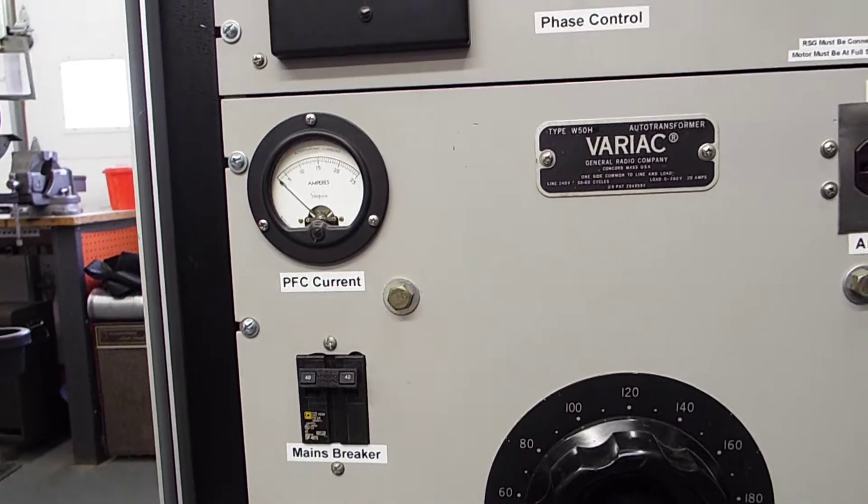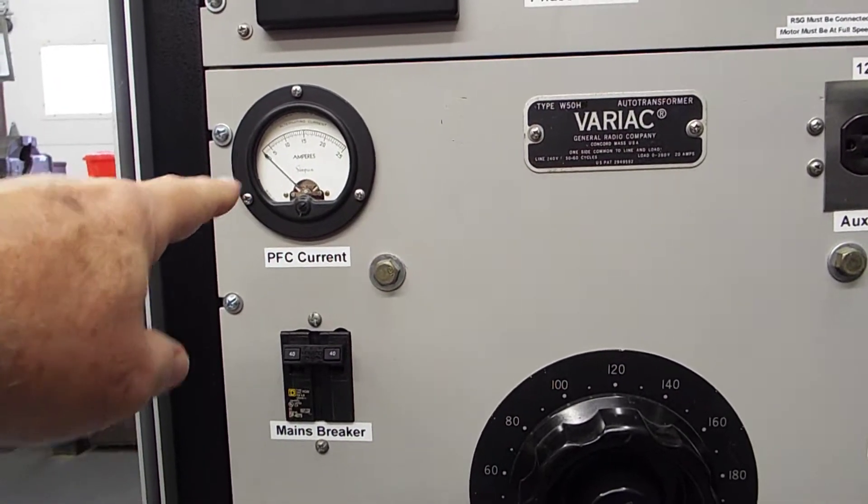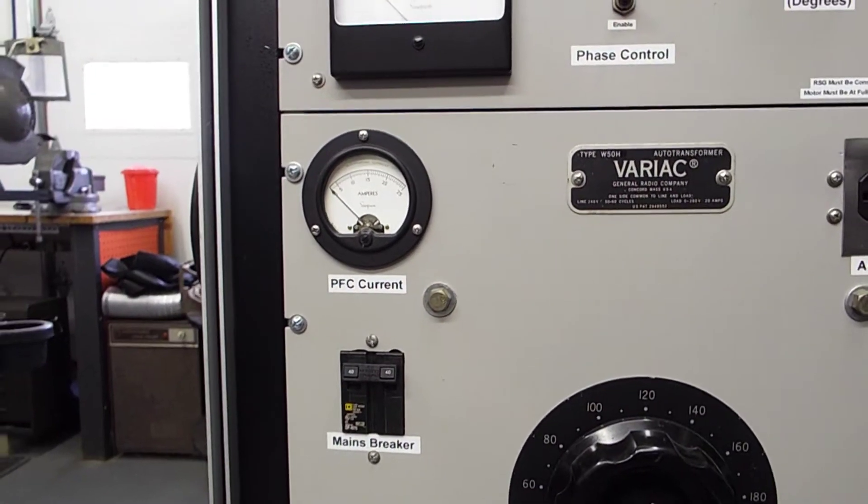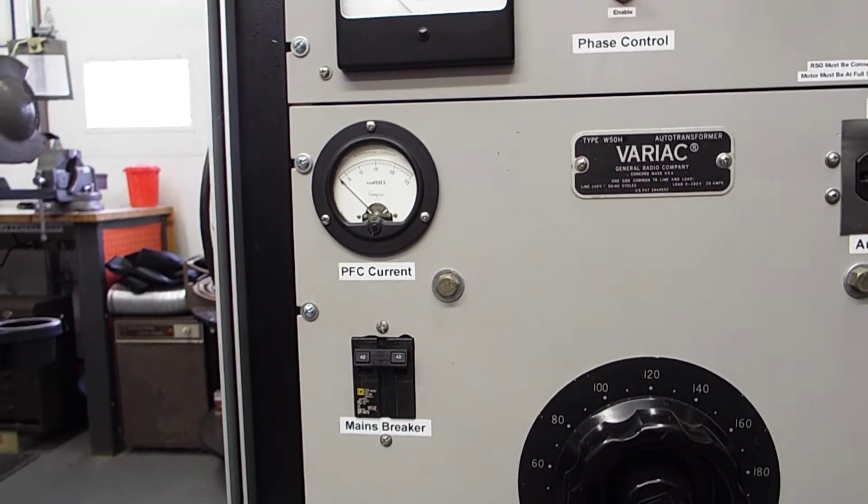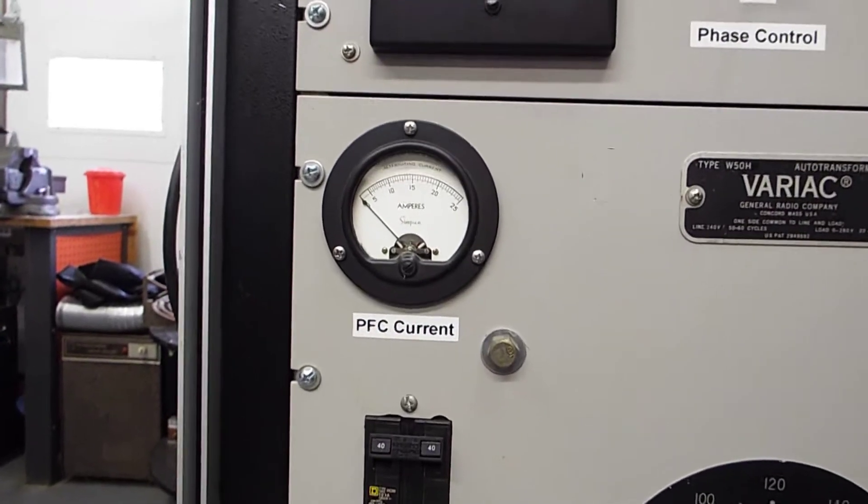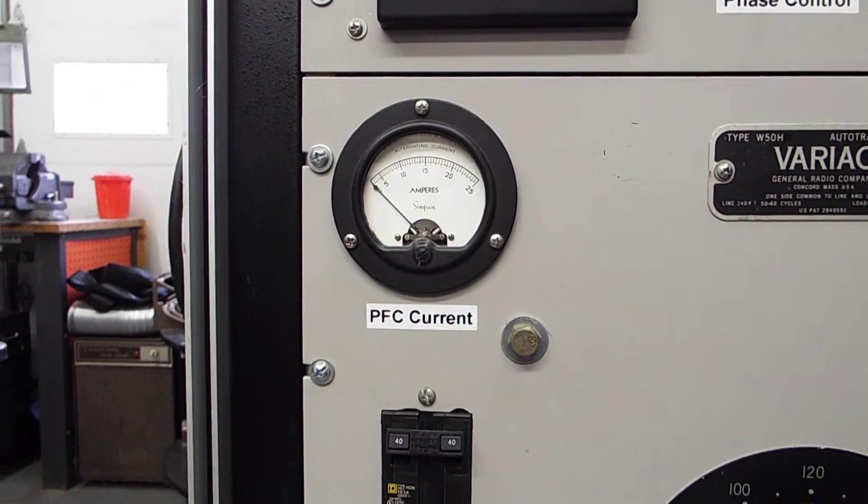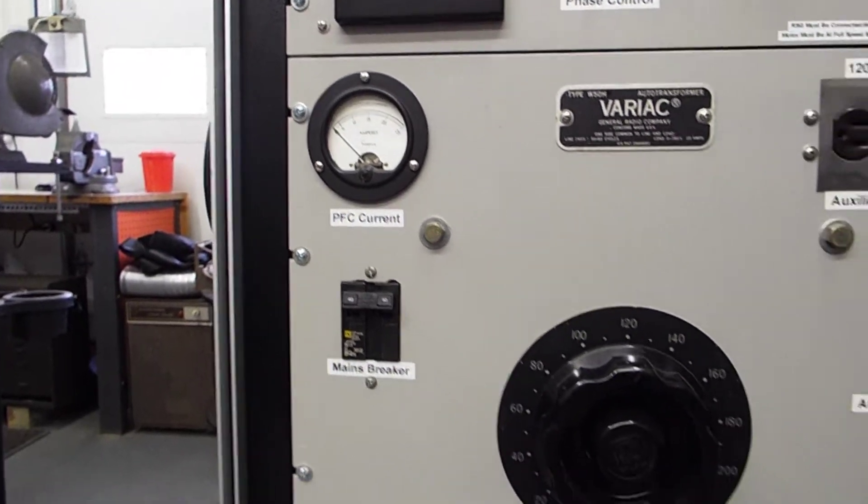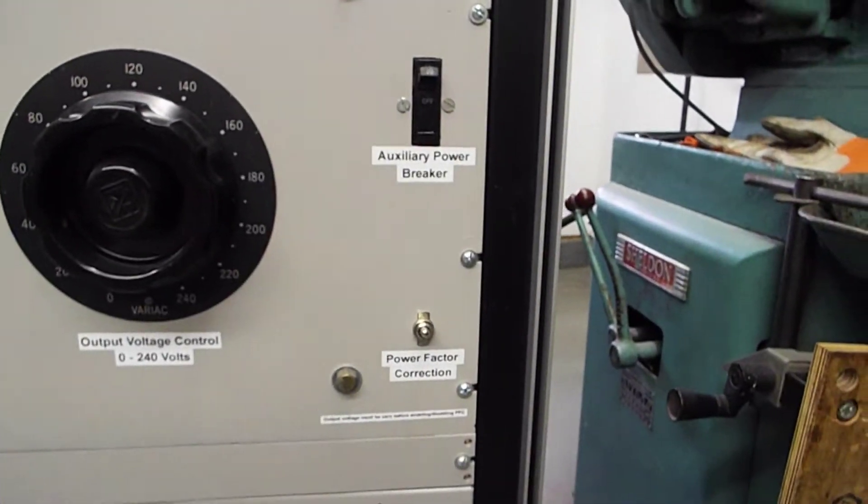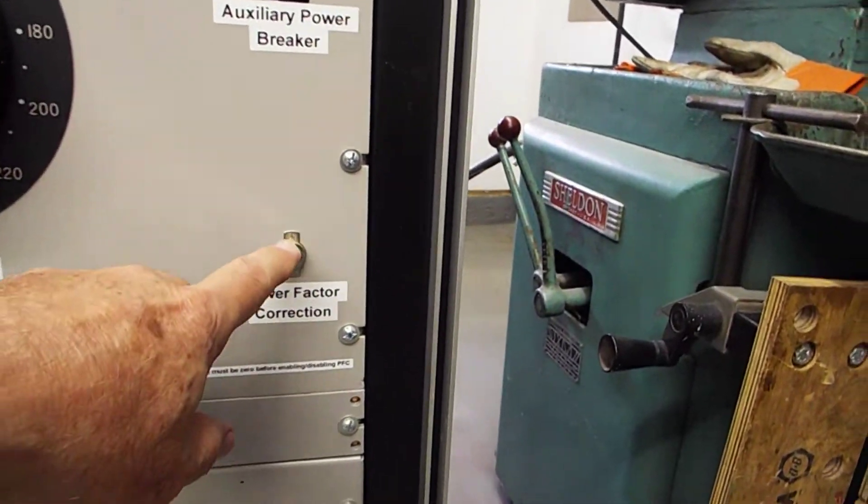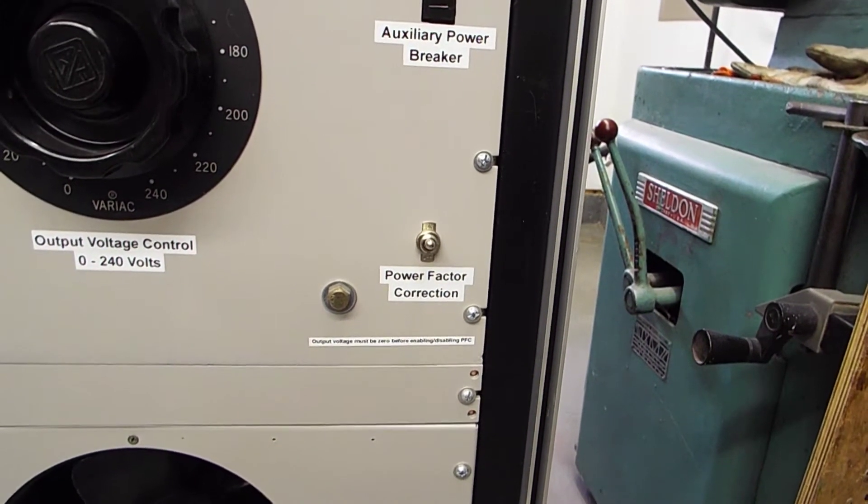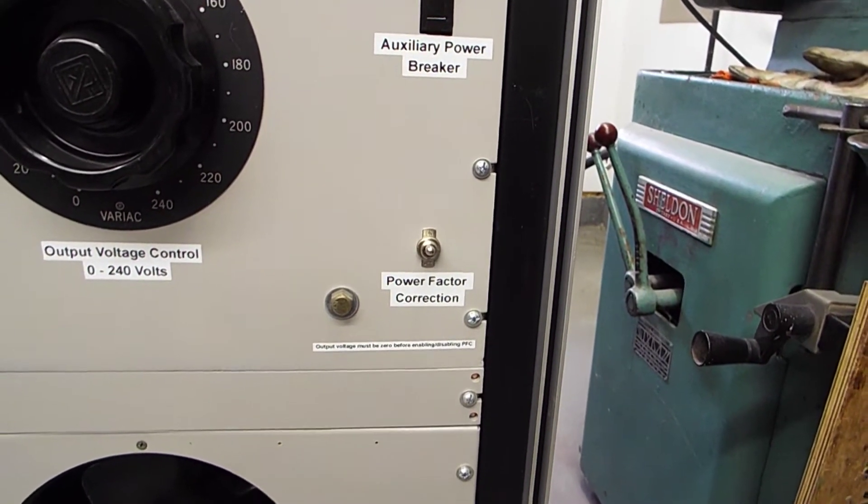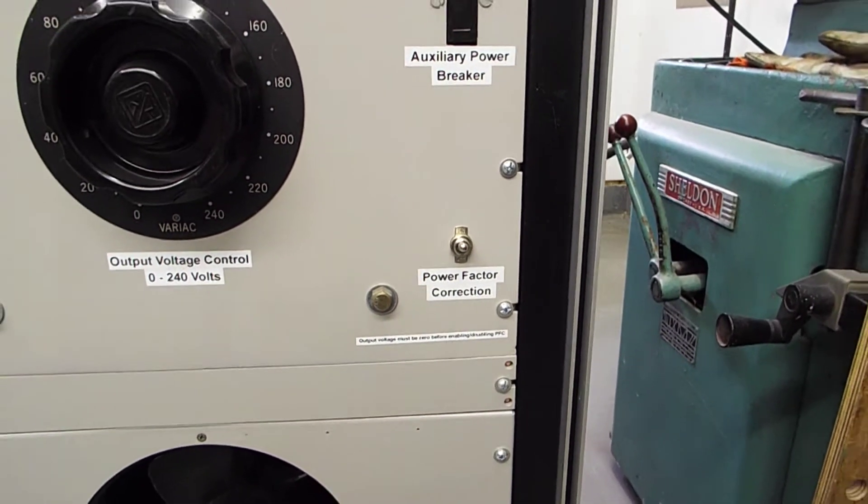And here is an ammeter for power factor correction current. So when I turn power correction factor on, I can see exactly how much current is being used for power factor correction. That's useful to know sometimes. And then here is a switch for enabling and disabling power factor correction.